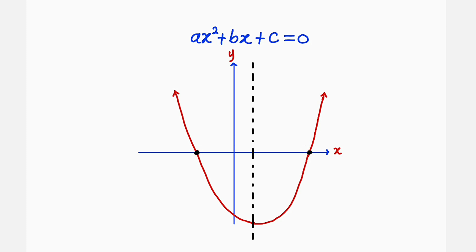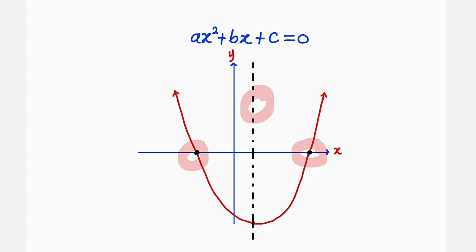The line of symmetry is the line that divides the parabola into two equal parts. This line can be obtained by adding these two roots together and dividing by two. But we don't know the roots — we are looking for the roots.